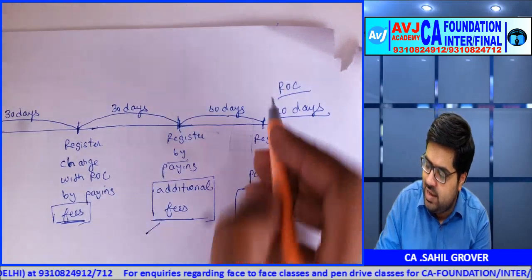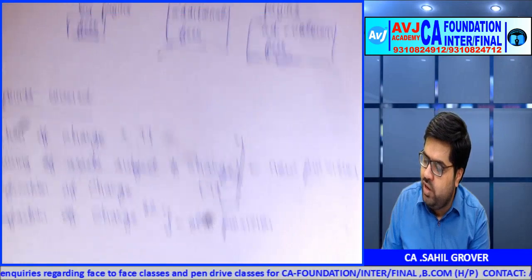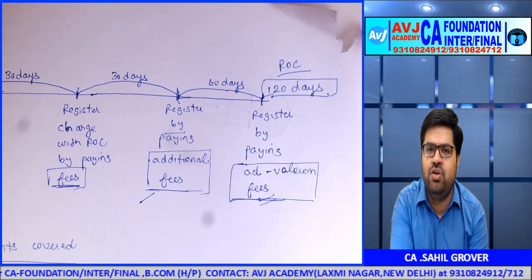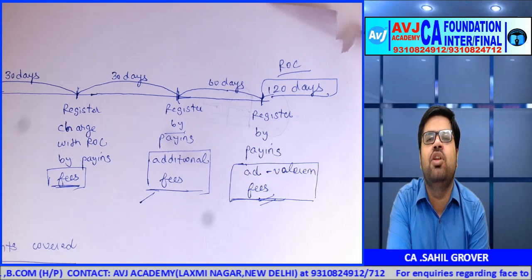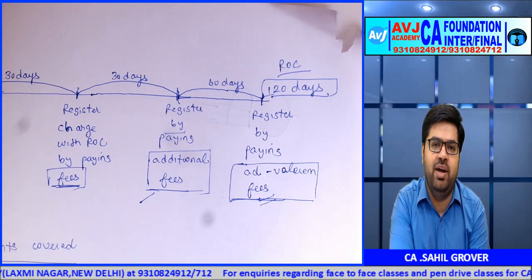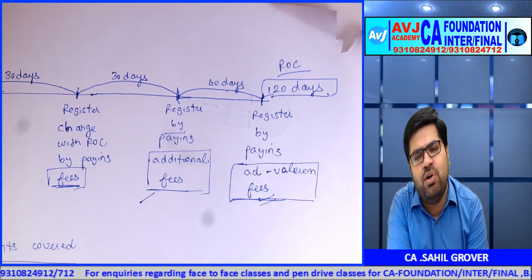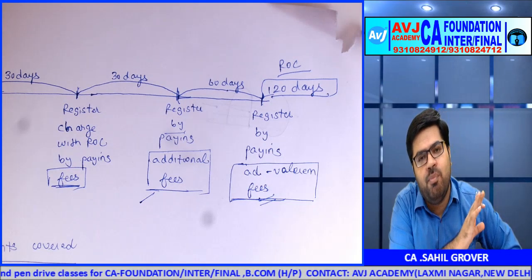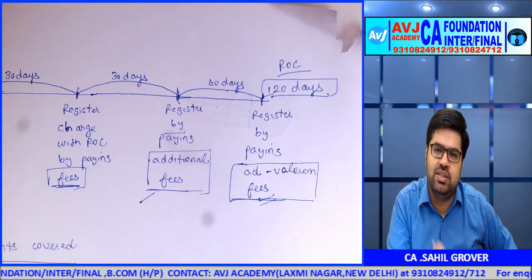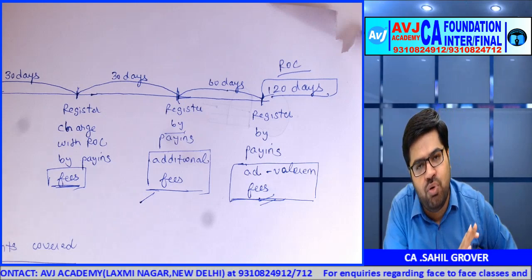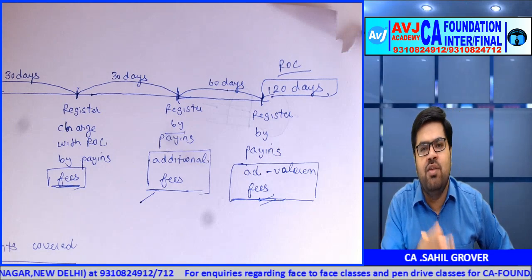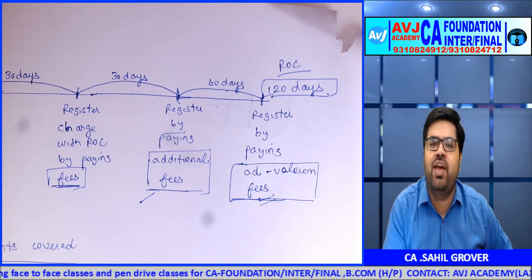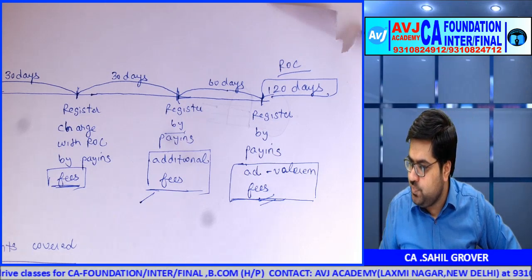Section 87's Central Government power has been entirely removed for new charges. Now 120 days is the maximum time from creation of charge — after that, the charge simply cannot be registered. There is no way out. This is the big amendment. Previously, you could be lazy and get it registered later by paying higher fees to Central Government. Now if you miss 120 days from creation, the charge cannot be registered — and consequently the liquidator can refuse to recognize it.